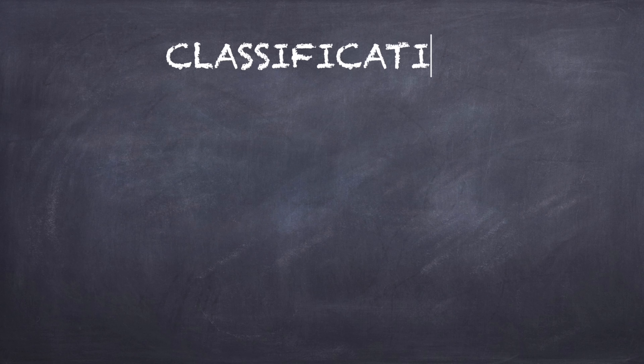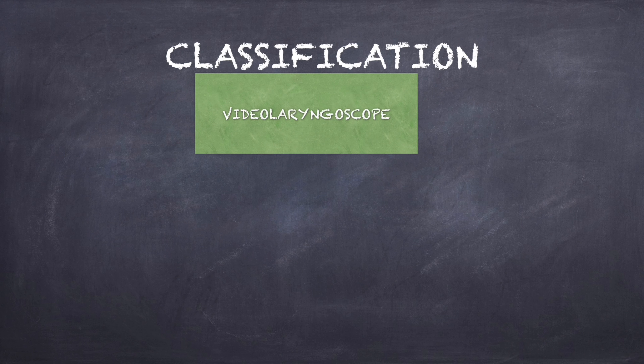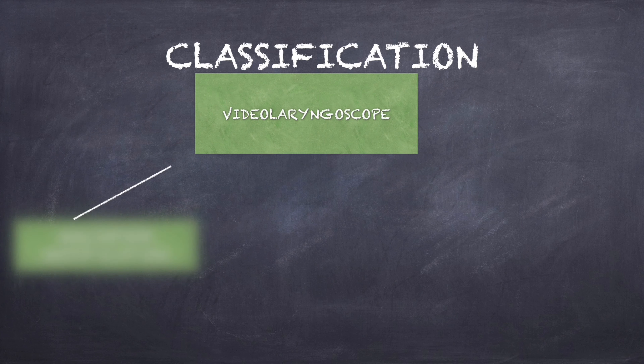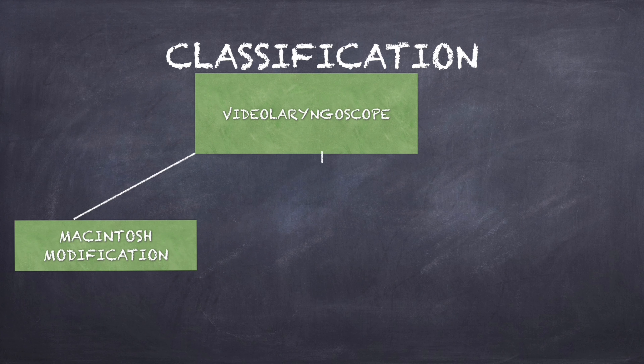Now let us see the classification of video laryngoscopes. They can be classified into rigid or flexible. In this video we will be talking mainly about rigid video laryngoscopes. A variety of device classifications exist, each with their own advantages and disadvantages. The most commonly used classification is based on the blade.